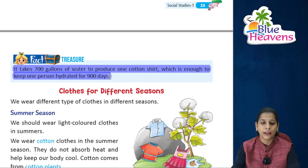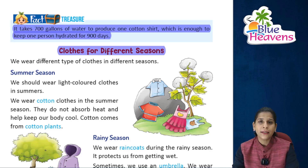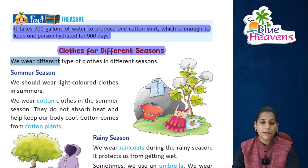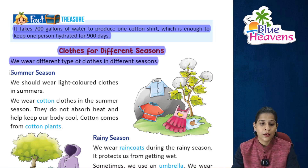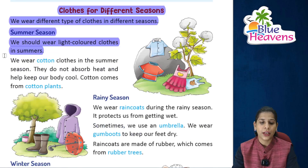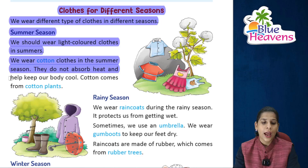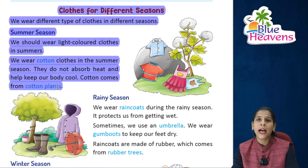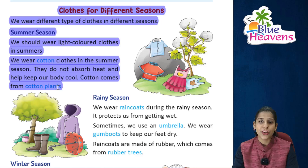Clothes for different seasons — we wear different types of clothes in different seasons. In the summer season, we should wear light-colored clothes. We wear cotton clothes in summer because they do not absorb heat and help keep our body cool. Cotton comes from cotton plants. So in summers, we should wear light-colored cotton clothes to stay fresh and cool.